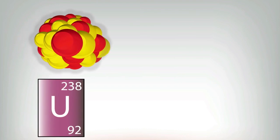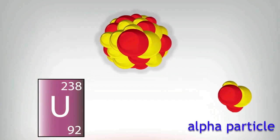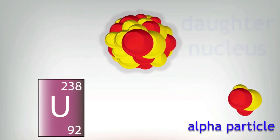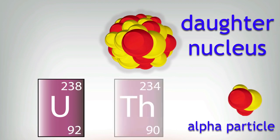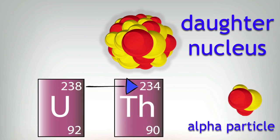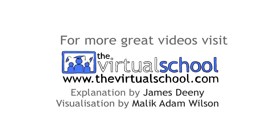What about the nucleus it leaves behind? This nucleus is called the daughter nucleus. It has lost two protons and two neutrons. The newly formed daughter nucleus loses four in its mass number and two in its proton number. It looks like a star.